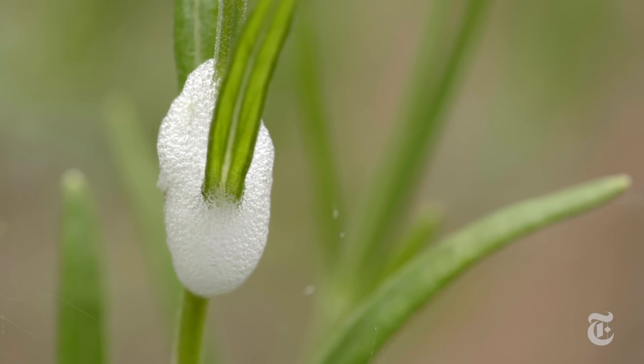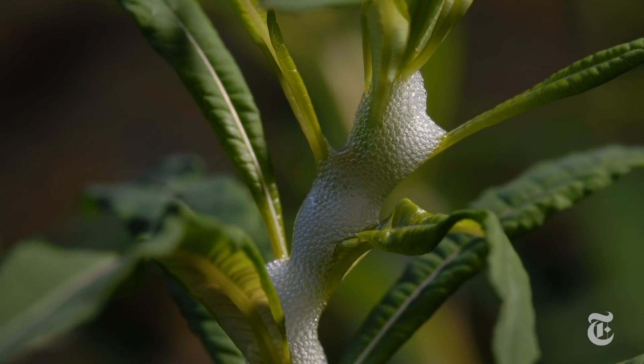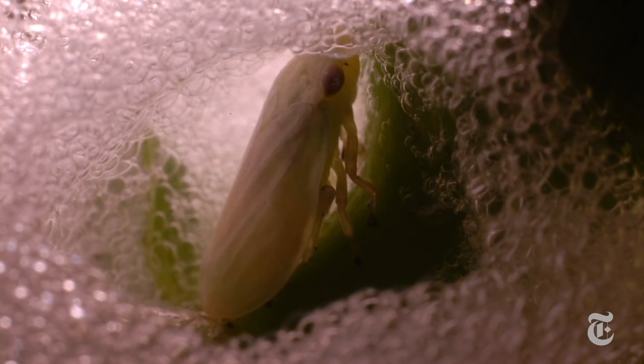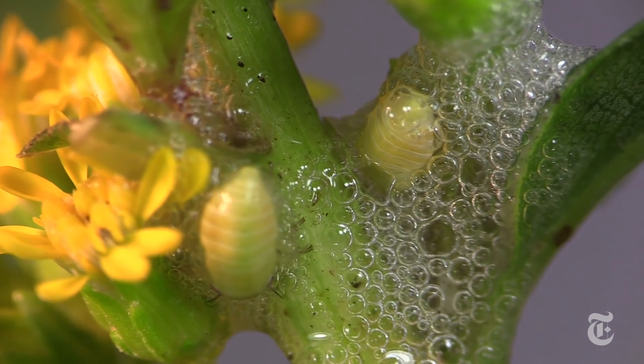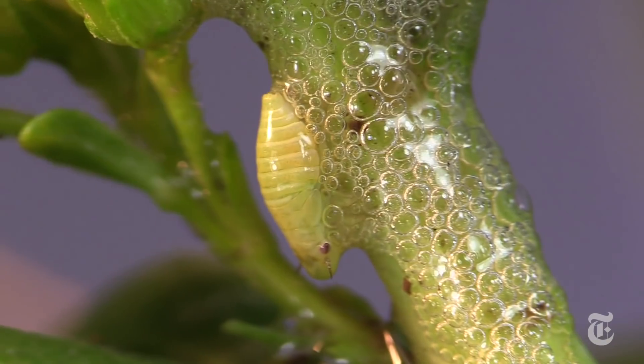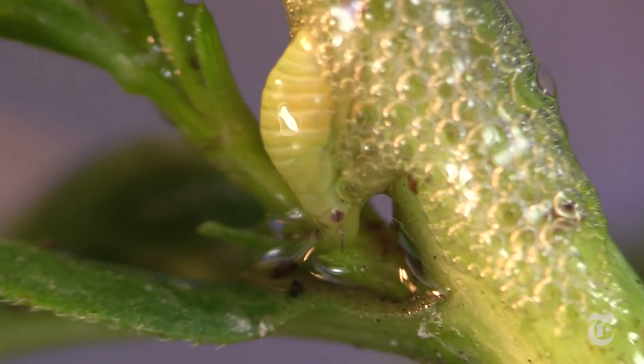But if you're eight years old or a scientist interested in how insects breathe, you might have looked inside and seen a spittlebug. That's the nymph or young form of an insect called a froghopper. It's a relative of aphids and cicadas. But why the spittle?